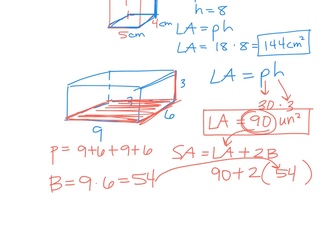So you're doing 90 plus 2. I was going to combine that. 2 times 54, so 90 plus 108. So you get, for your surface area, 198. I didn't give you units, so we're just going to do units squared.